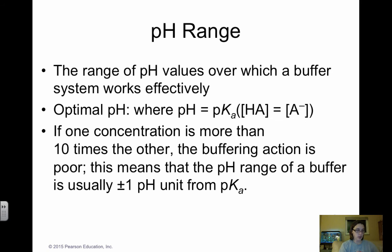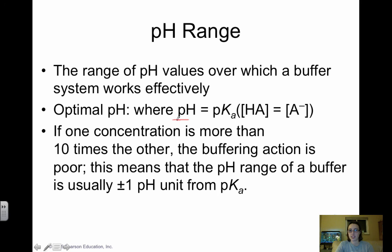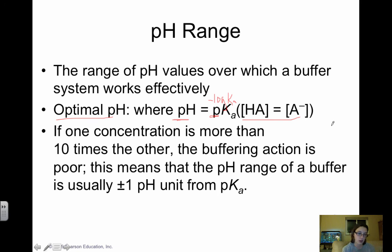The range of pH values that a buffer can work within is called the pH range. The optimal pH — where maximum buffering occurs — is when pH equals pKa. The 'p' means negative log, so pKa is simply the negative log of Ka. The optimal pH is when the concentrations of weak acid and weak base are identical. To find the optimal pH for a buffer, choose a weak acid with a Ka whose exponent is as close to the desired pH as possible, then use equal amounts of acid and base.